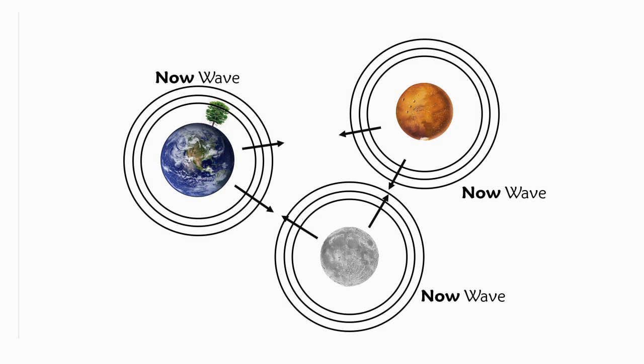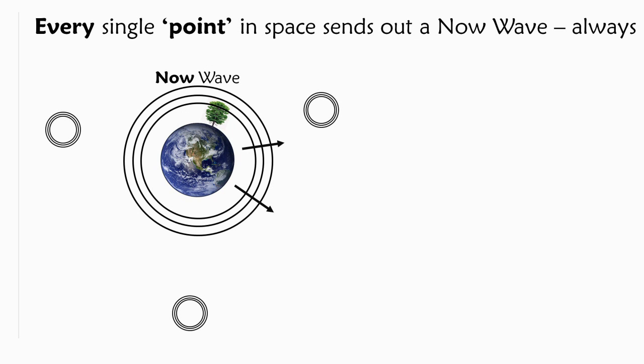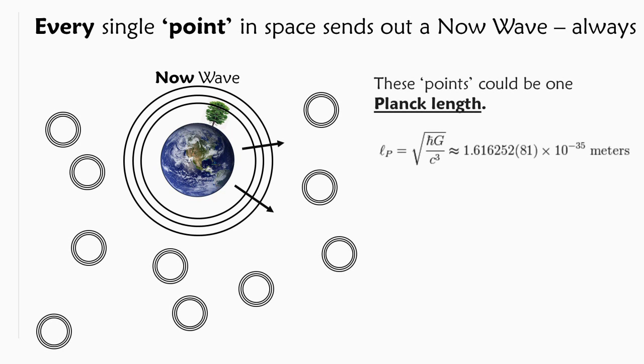And what happens is that all centers of creation are sending out now waves. Every single point in space sends out a now wave always. These points we are talking about could be each one Planck length which is said to be the smallest distance something can be known about.